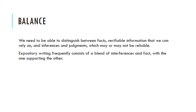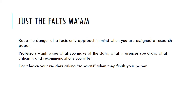As critical thinkers, we need to be able to distinguish between facts, inferences, and judgments. Facts are verifiable information, and inferences and judgments may not be all that reliable. Expository writing frequently consists of a blend of inferences and fact, with the one supporting the other. When you are tasked with a research paper, most professors do not want just facts. They want to see what you make of the data, what inferences you draw, what criticisms and recommendations you offer — and never leave your readers asking 'so what?' when they finish your paper, or they will feel cheated.